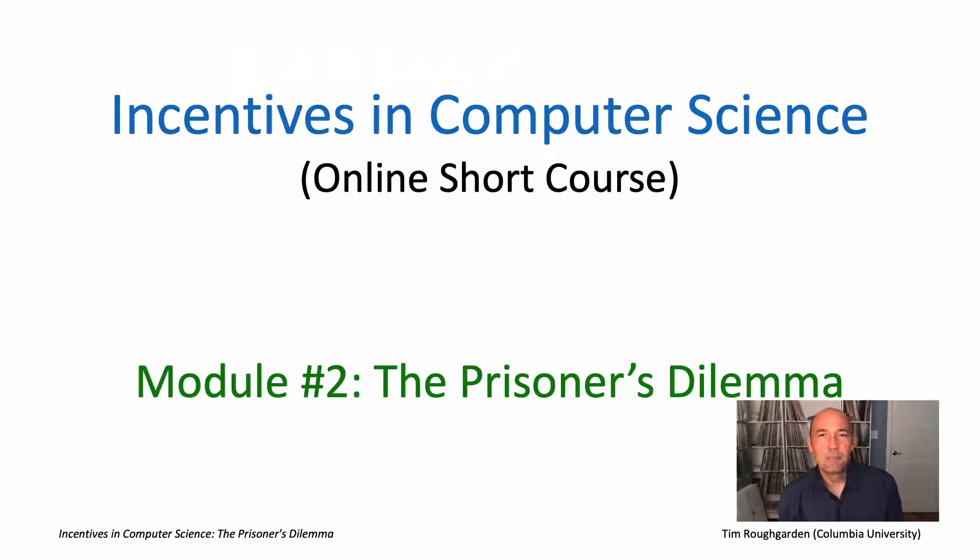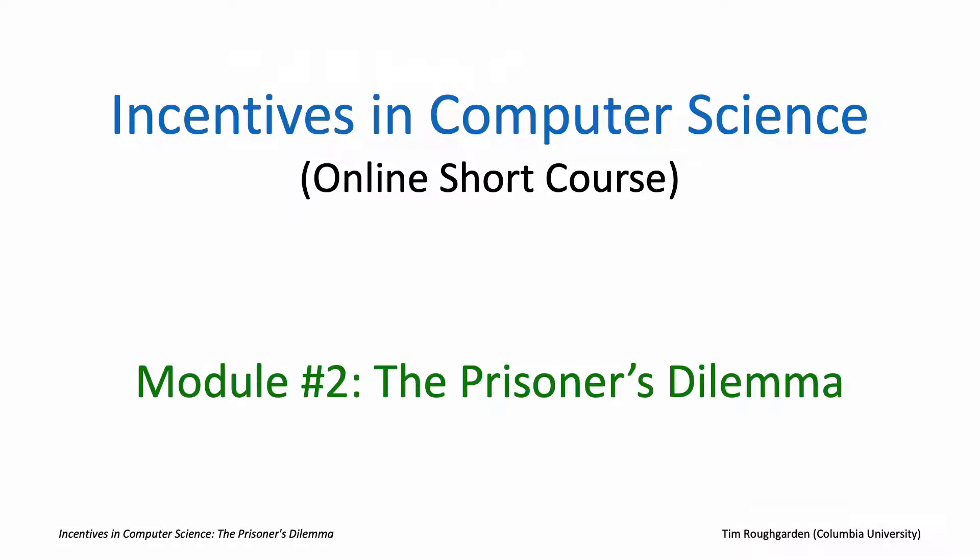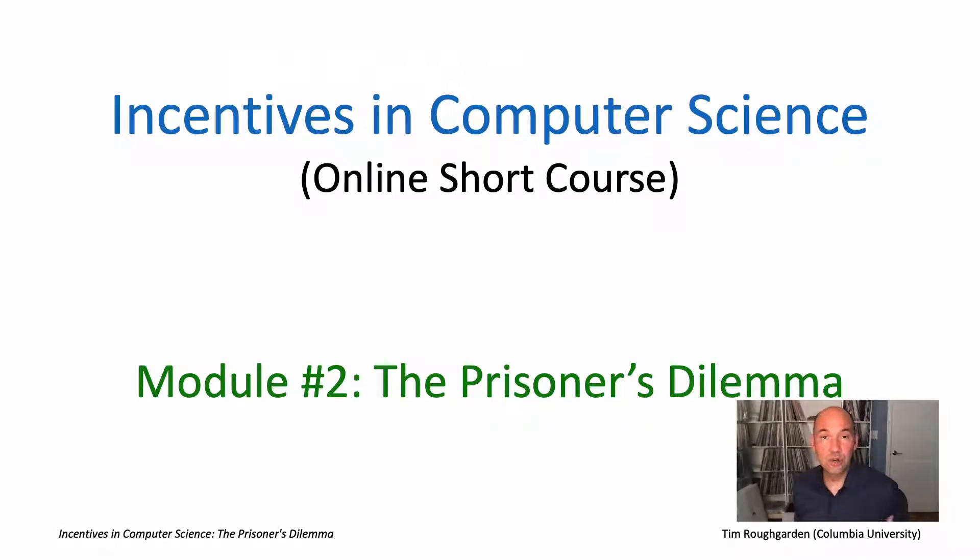Hi everyone and welcome to module number two of this short course on incentives in computer science. This is a module about the prisoner's dilemma, which is a very famous and frankly quite conceptually useful example from the field of game theory. We'll talk about the prisoner's dilemma in its own right, learn some lessons about it, and then we'll wrap up this module by seeing how those lessons were actually applied in a well-known peer-to-peer approach to file transfer, something known as BitTorrent. As always, if what I'm going to discuss in this module whets your appetite for further details, I encourage you to check out the lecture notes for my Incentives in Computer Science class, which again you can access from my homepage, timruffgarden.org.